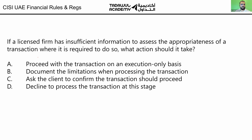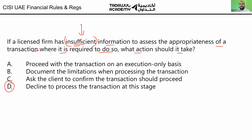Next: if a licensed firm has insufficient information to assess the appropriateness of a transaction where it is required to do so, what action should it take? If the company does not have enough information to understand whether the transaction is appropriate or not, it should stop and decline. This is different from knowing the product is not appropriate — here you simply do not know. So you decline the transaction. Most of you got it wrong — please watch out for this distinction.